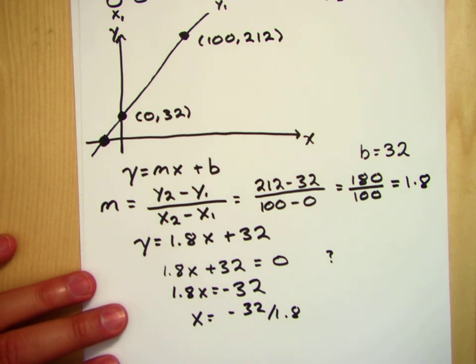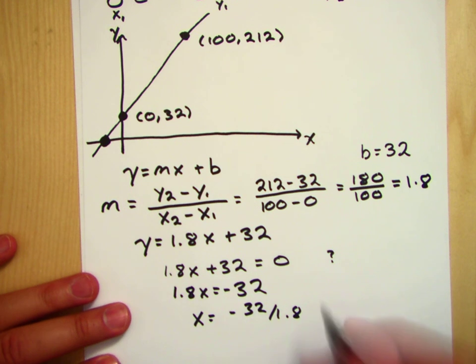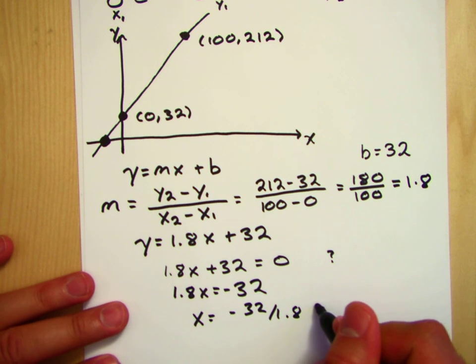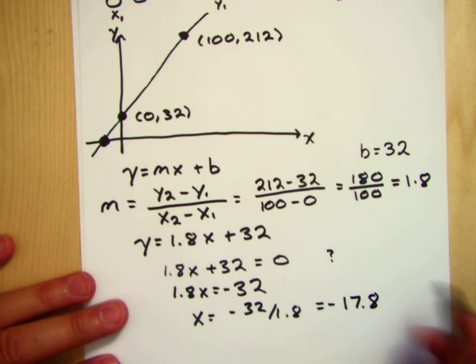Oh wow. Is that right? What am I getting? I'm getting something like negative 17.8 or something like that.